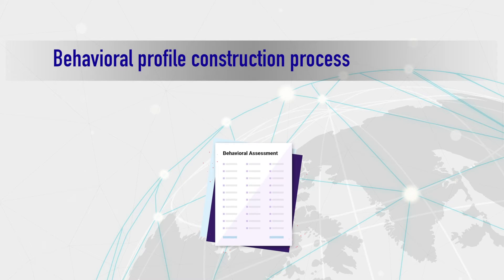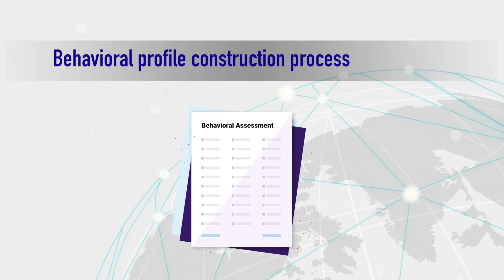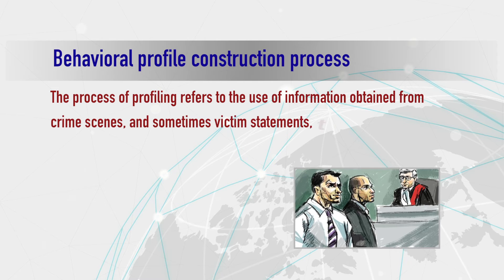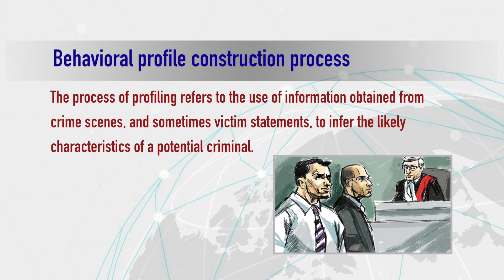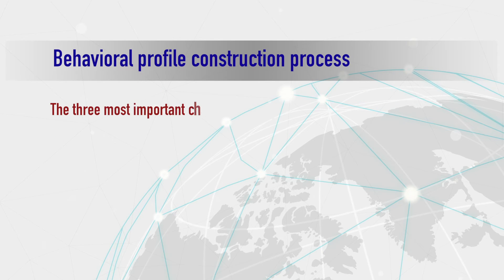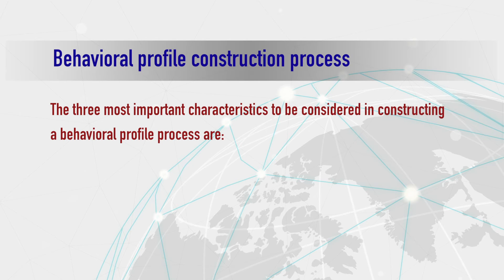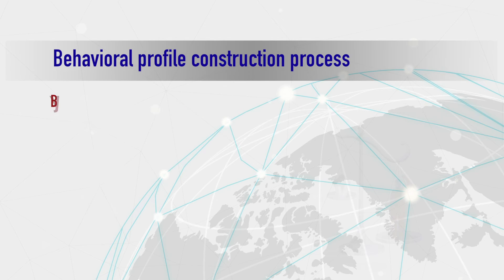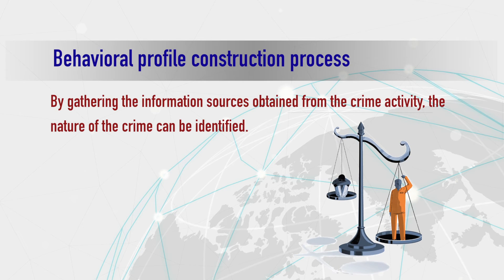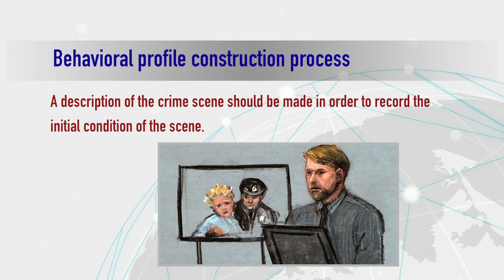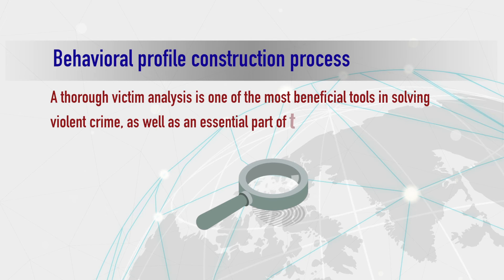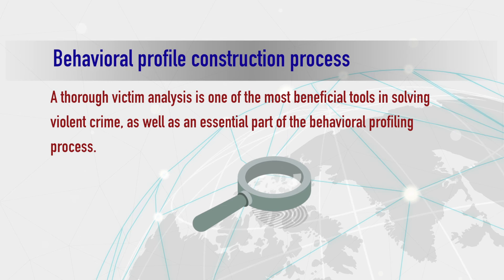Now we'll move on to the behavioral profile construction process. Creation of the behavioral profile of a criminal is a very important stage. The process of profiling refers to the use of information obtained from crime scenes and sometimes victim statements to infer the likely characteristics of a potential criminal. The three most important characteristics to consider are: the information sources, the crime scene, and the victim analysis. By gathering information from the crime activity, the nature of the crime can be identified. A description of the crime scene should record its initial condition, and a thorough victim analysis is one of the most beneficial tools in solving a violent crime and is an essential part of the behavioral profiling process.